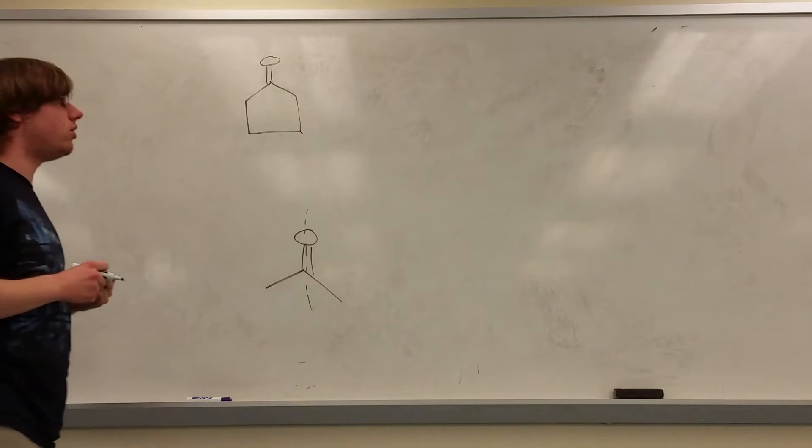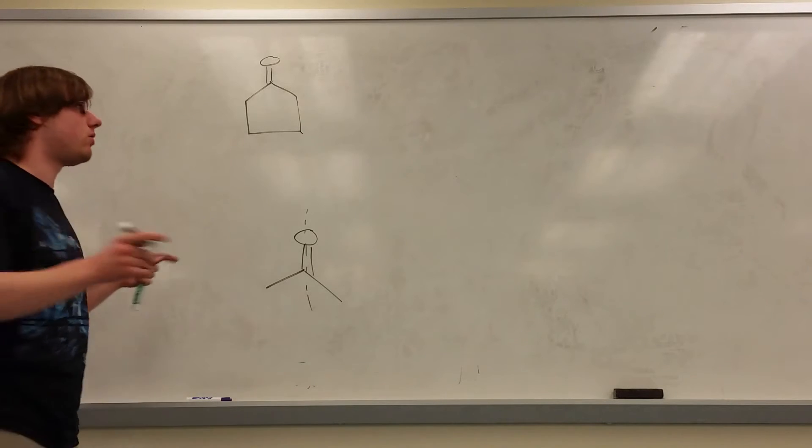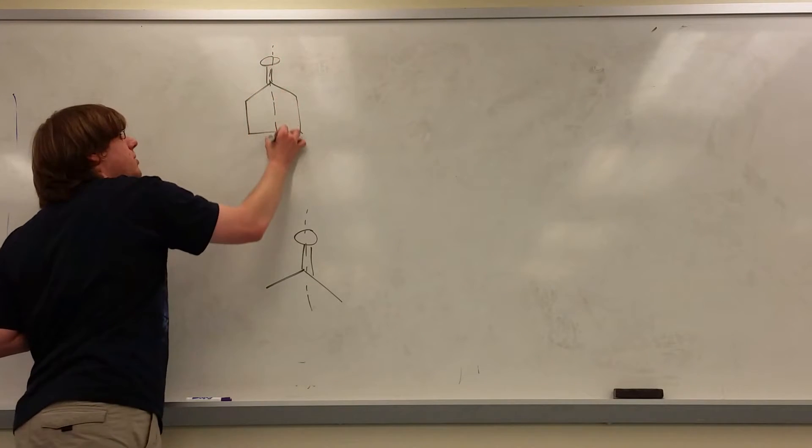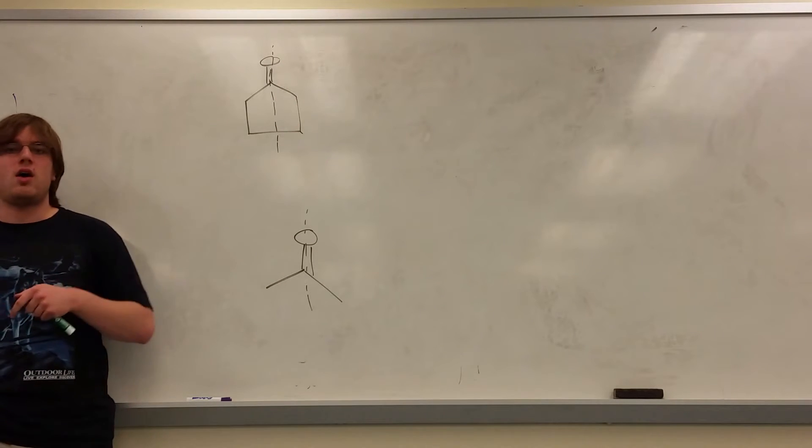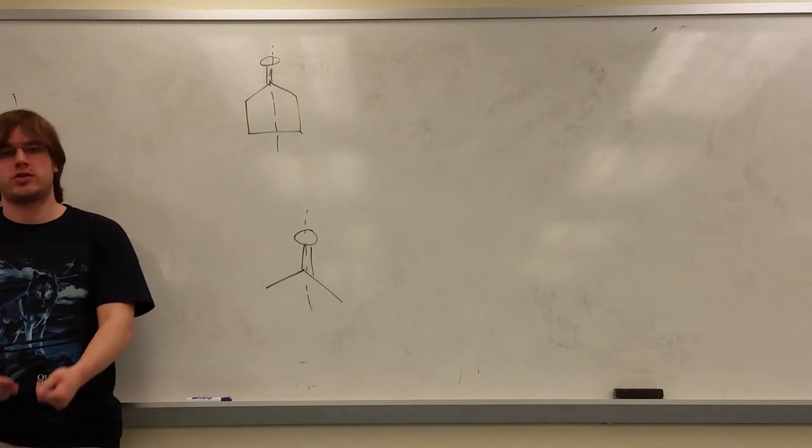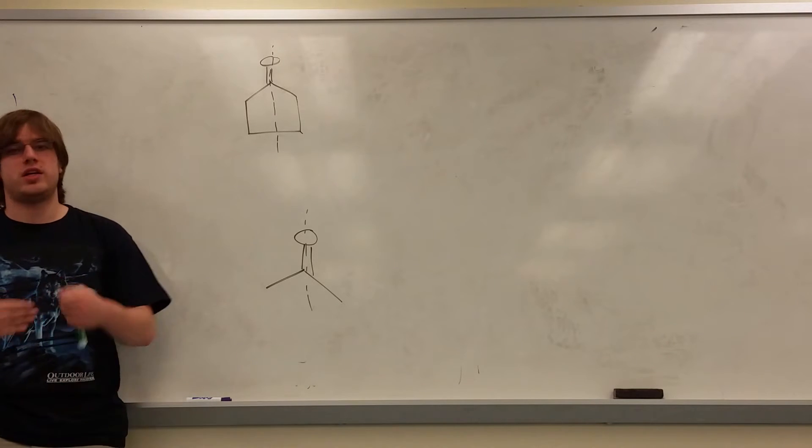In general, whenever you see a symmetric ketone, where everything on the left of the carbonyl is the same on the right, you are going to be using what we just did. First, going backwards, a decarboxylation, and then a Claisen condensation.